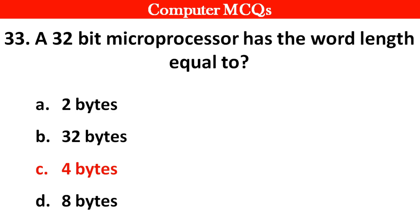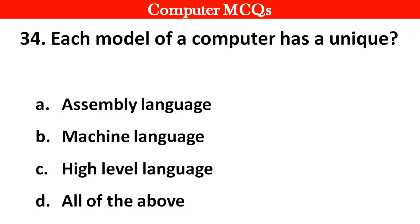Each model of a computer has a unique: option A assembly language, B machine language, C high level language, D all of the above. Right answer is option B, machine language.